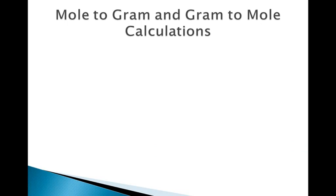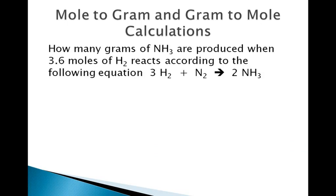I will show you how to do these calculations by going straight to an example. How many grams of NH3 are produced when 3.6 moles of H2 reacts according to the following equation? In this case, we were given 3.6 moles of H2, and we want to find out the quantity of NH3. In the previous video, we were looking for the number of moles of NH3, but in this video we actually want to get the number of grams.